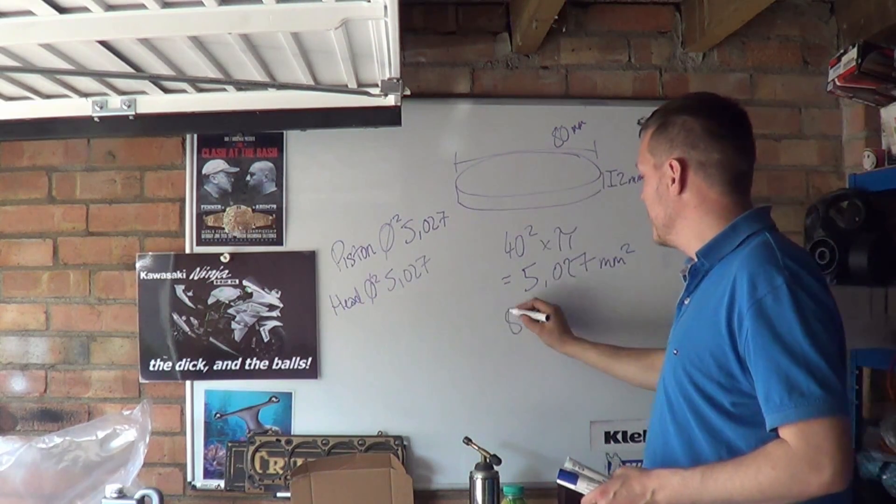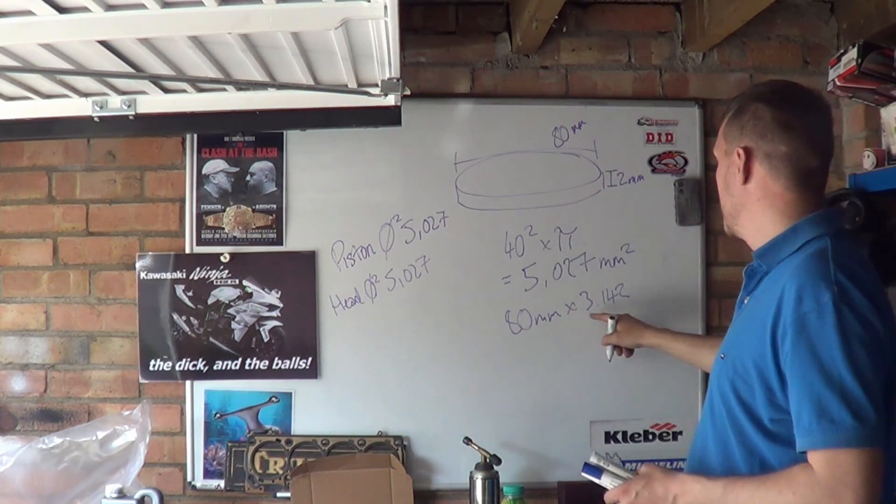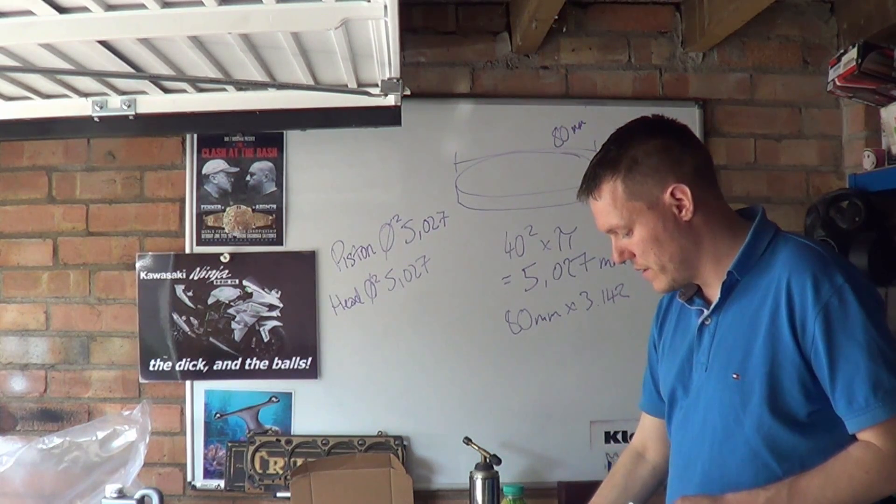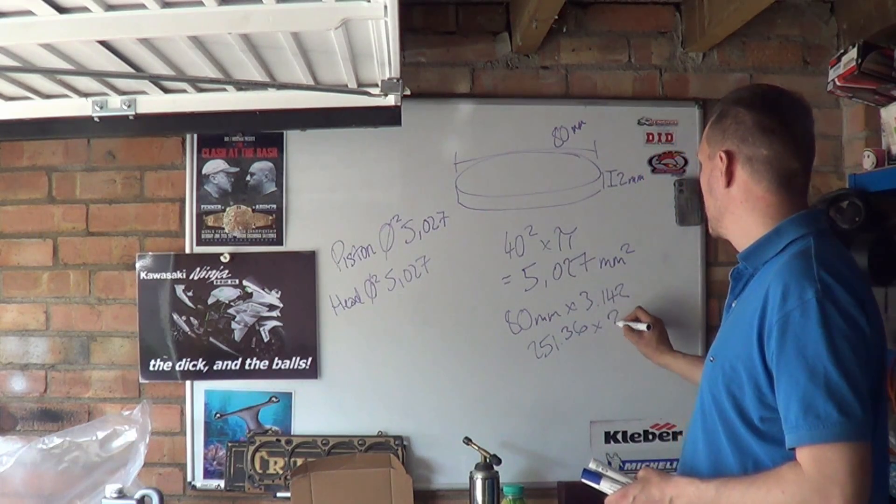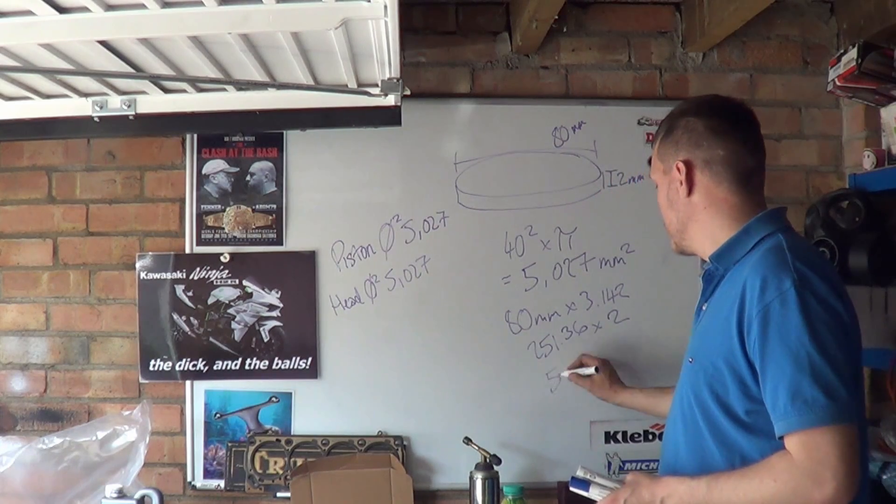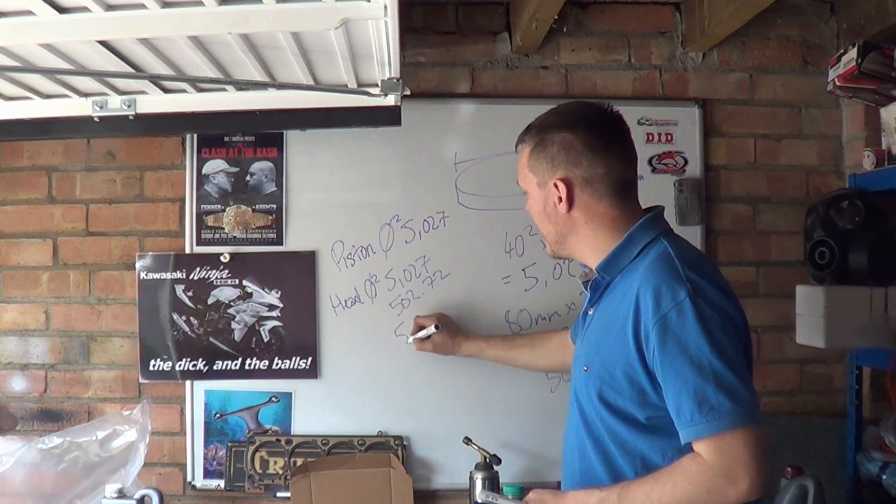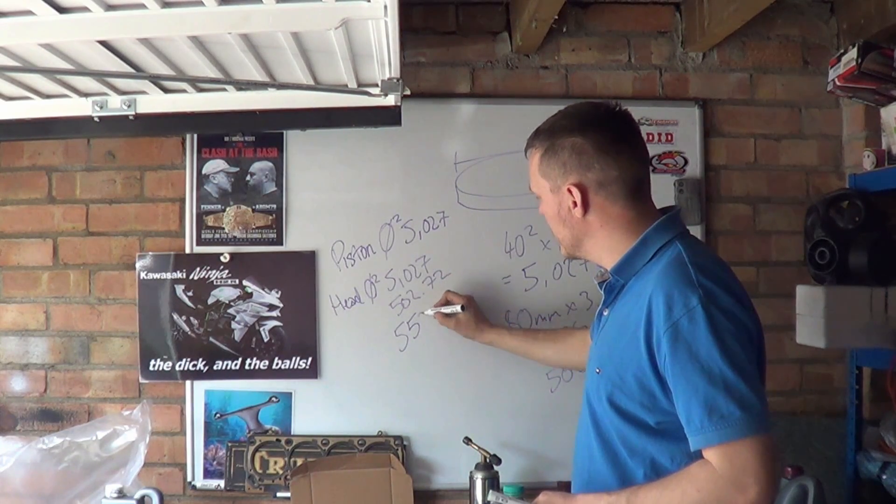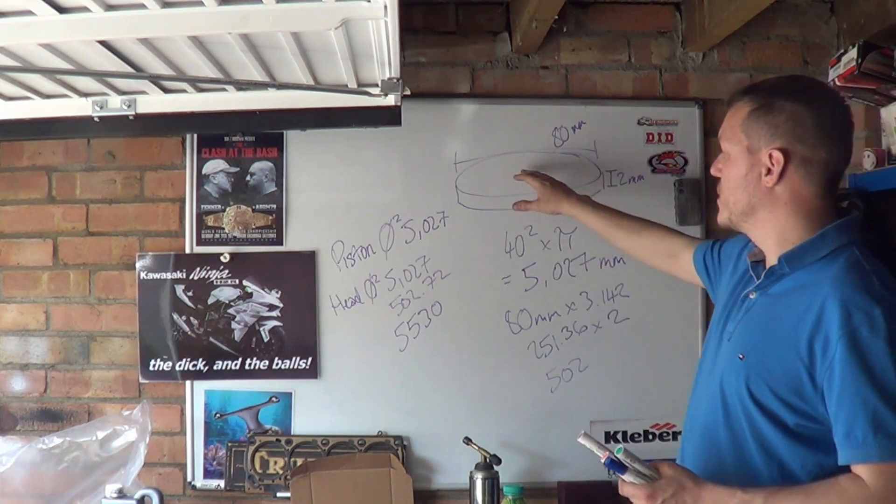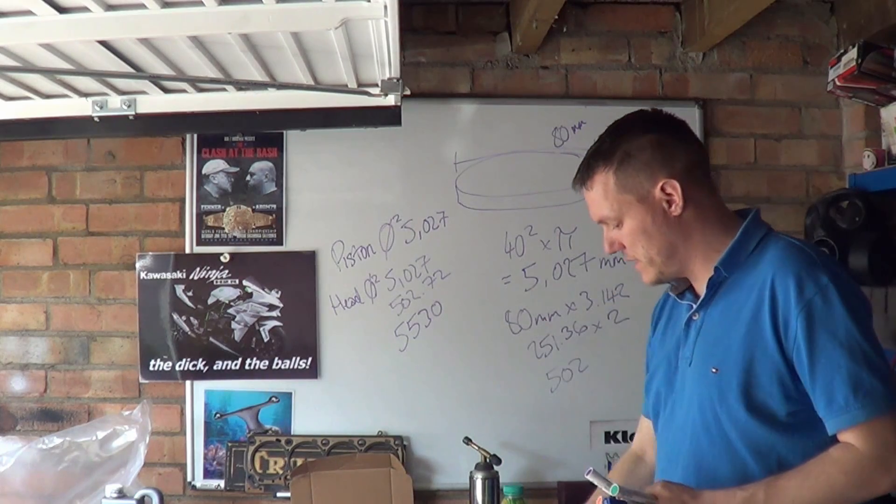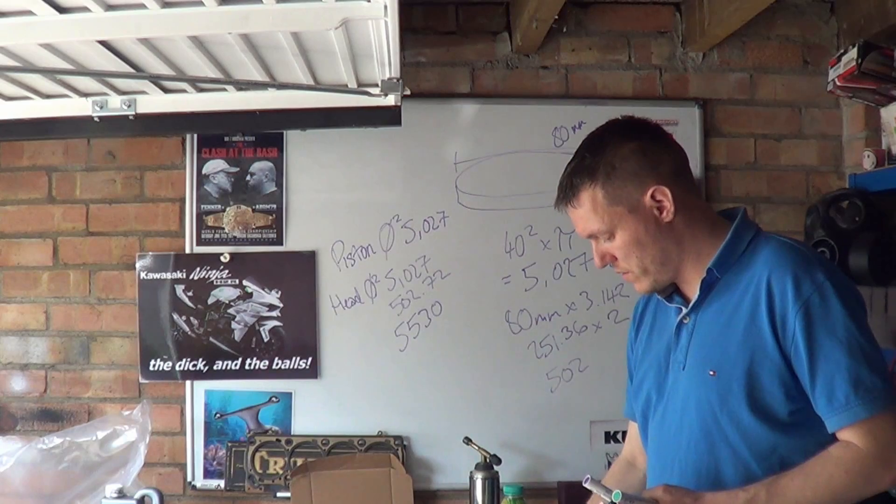Now we need to calculate this sidewall. Our 80 millimeters times 3.142, which is the ratio for circumferences, gives us 251.36. We times that by 2, which equals 502.72. So we've got 502.72 there for the sidewall.